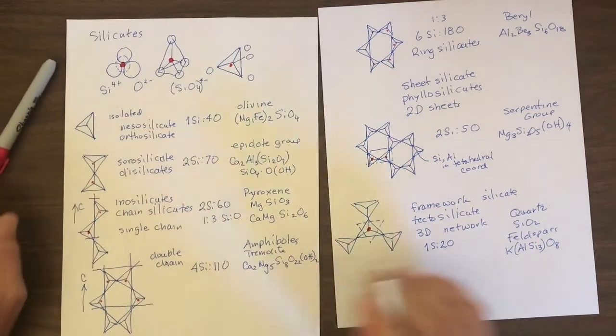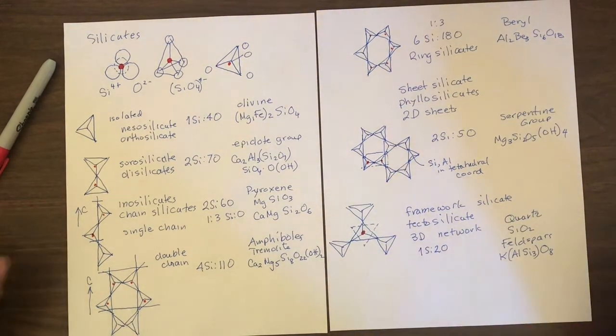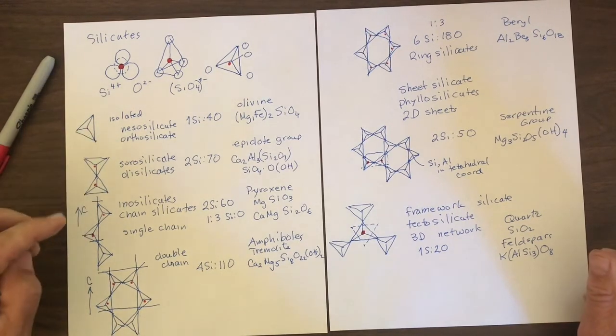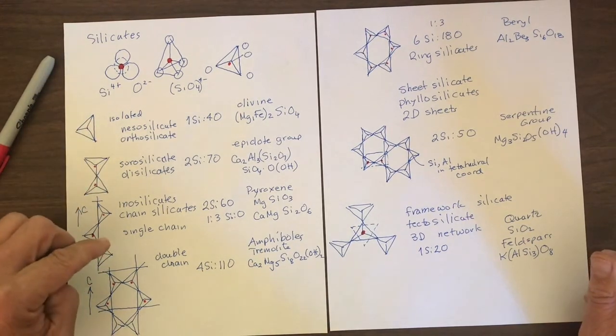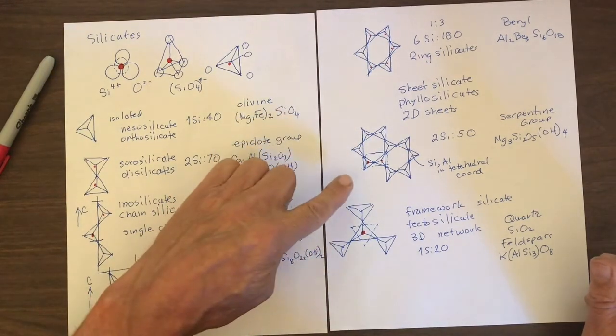So in summary, the silicate minerals are classified based on how many silica tetrahedra are linked. They go from isolated tetrahedra of nesosilicates to doublets, to chains, single chains, double chains, and finally, to ring silicates, sheet silicates, and then 3D framework silicates.